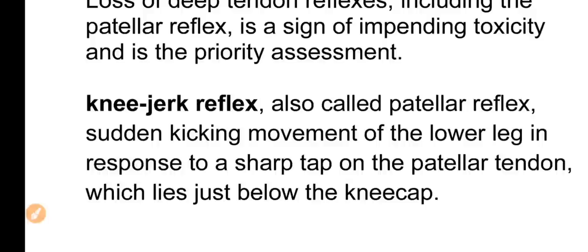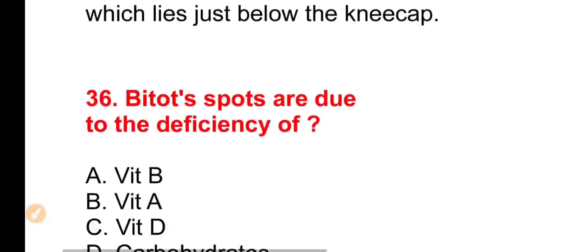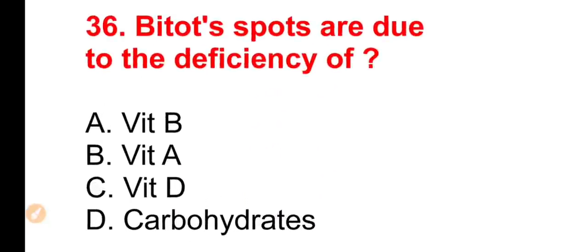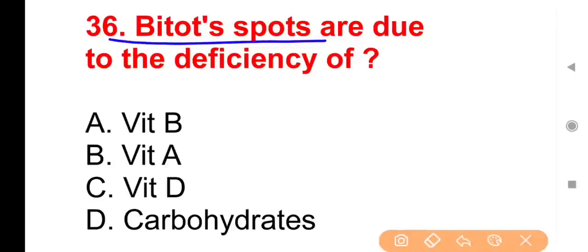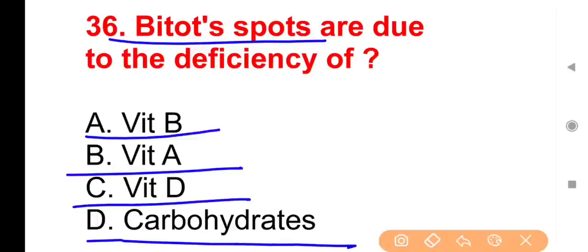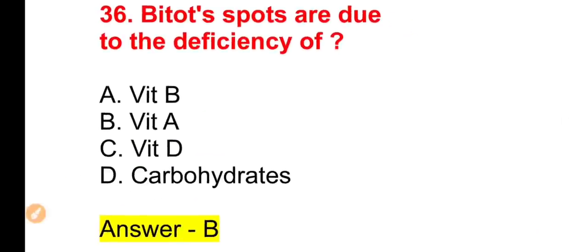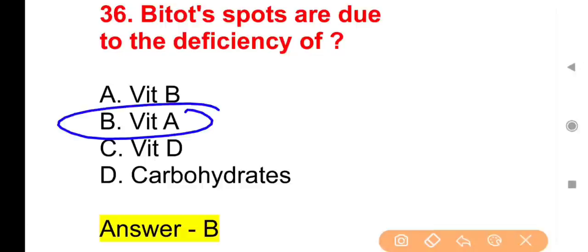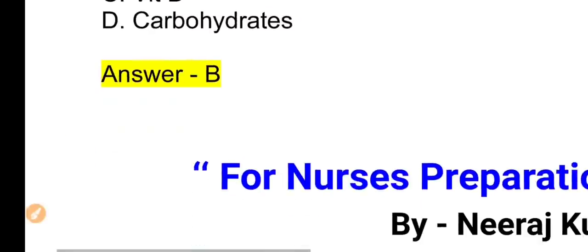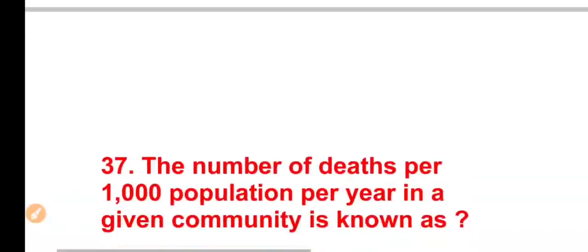Question 36: Bitot's spots are due to deficiency of — Vitamin B, Vitamin A, Vitamin D, or Carbohydrates. The right answer is Option B — Vitamin A deficiency causes brown-colored spots on the white part of the eye, known as Bitot's spots.